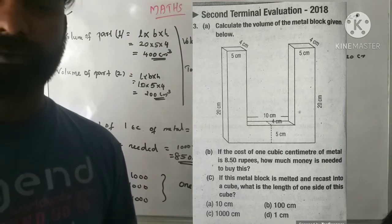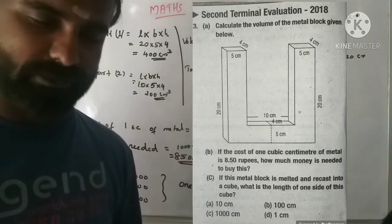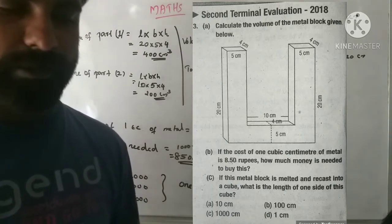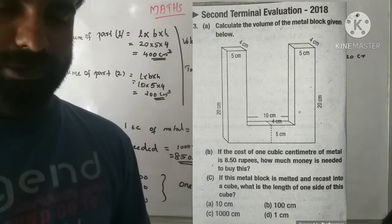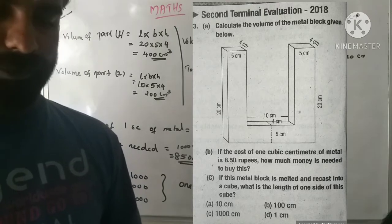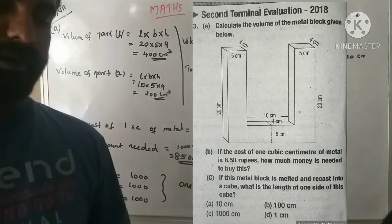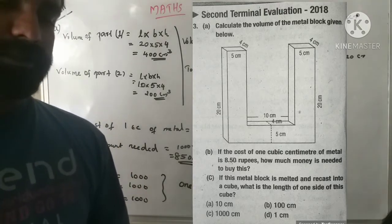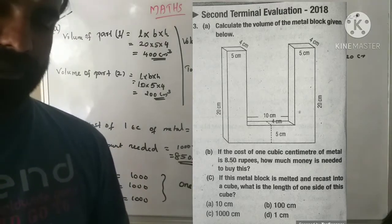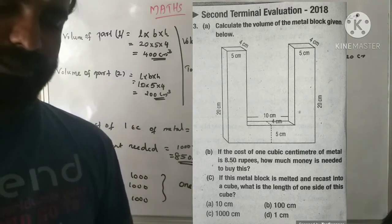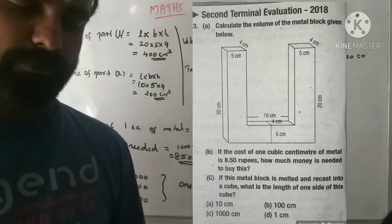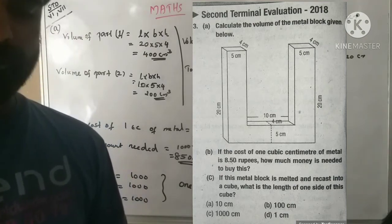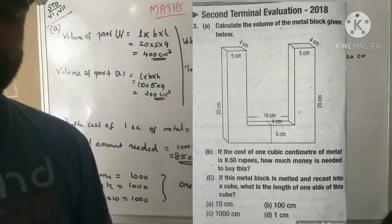A picture of a metal block has to be removed from the metal block. If the cost of 1 cubic centimeter of metal is 8.5 rupees, how much money is needed to buy this?